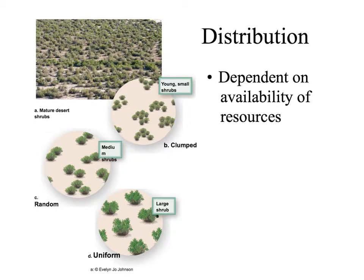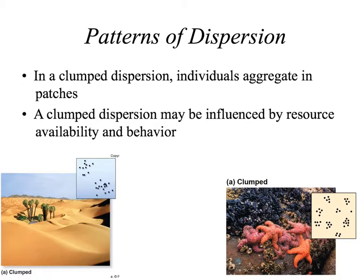Distribution is dependent on the availability of resources. We are going to look at three distribution patterns: clumped, random, and uniform. Clumped distribution, or dispersion, is when individuals group together in patches. It is usually influenced by resource availability or sometimes by behavior. In these examples, water is scarce in the desert, so organisms clump around that resource. We also see sea stars clumping together around the mollusks, which are their food source — so again, they are clumping around the resource they need to survive.